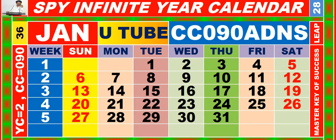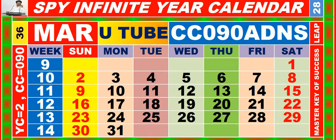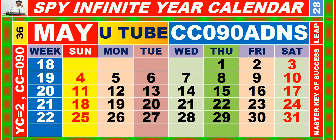Calendar for the month of January having calendar code equal to 090. Calendar for the month of February having calendar code equal to 090. Calendar for the month of March having calendar code equal to 090. Calendar for the month of April having calendar code equal to 090. Calendar for the month of May having calendar code equal to 090.